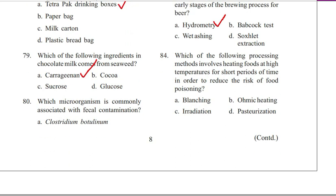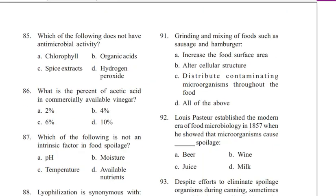Question 84. Which of the following processing methods involves heating foods at high temperatures for short periods of time in order to reduce the risk of food poisoning? Blanching, ohmic heating, radiation, or pasteurization. Answer is pasteurization, D.